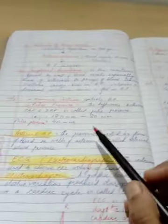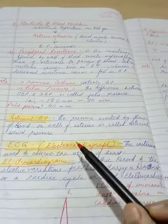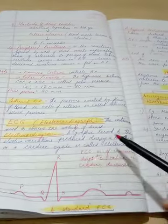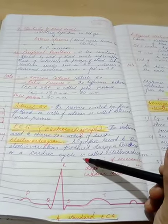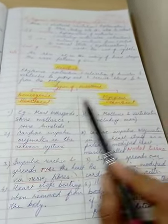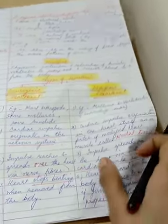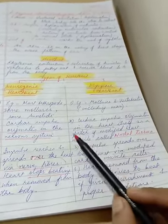After that we discussed about arterial blood pressure, ECG and the electrocardiogram, various waves obtained on the electrocardiogram. Then we talked about heartbeat, the types of heartbeat that is neurogenic and myogenic heartbeat with examples and differences.